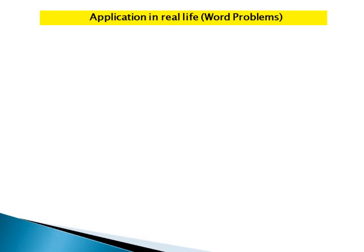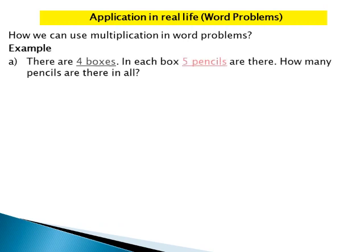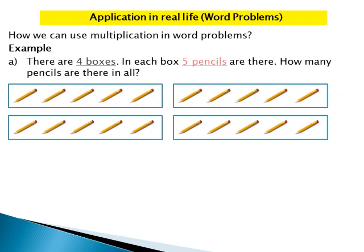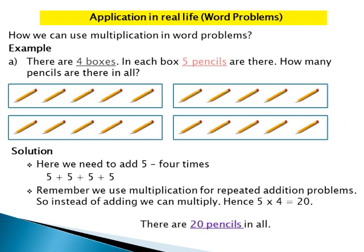Application in real-life word problems. We will now learn how to use multiplication in word problems. Example: There are 4 boxes, and in each box there are 5 pencils. How many pencils are there in all? We need to add 5 four times. Since multiplication is used for repeated addition, instead of adding 5 four times, we multiply 5 times 4. Hence, 5 times 4 equals 20. There are 20 pencils in all.